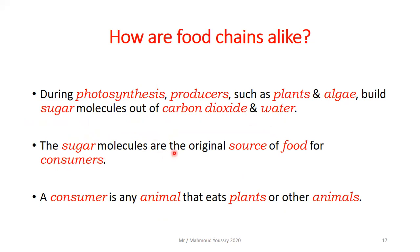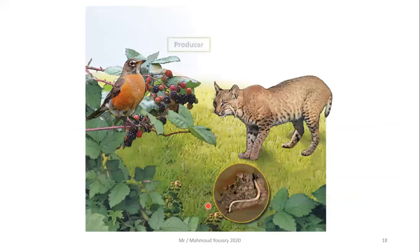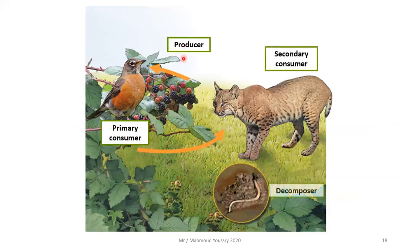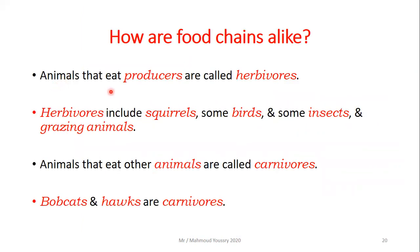During photosynthesis, producers such as plants and algae build sugar molecules out of carbon dioxide and water. The sugar molecules are the original source of food for consumers. A consumer is any animal that eats plants or other animals. In the food chain, plants are the producers, and the organism that eats the producers is the primary consumer, such as the bobcat at the secondary consumer level.